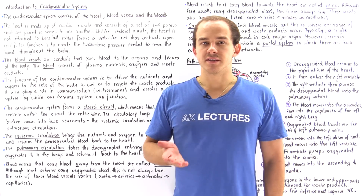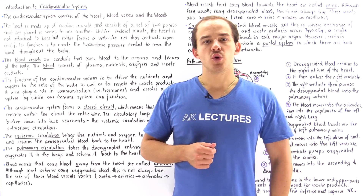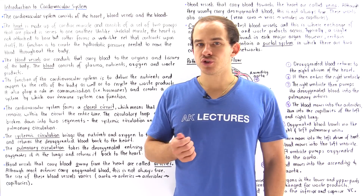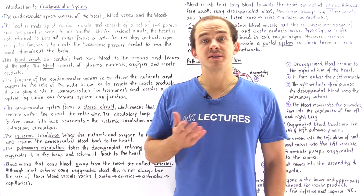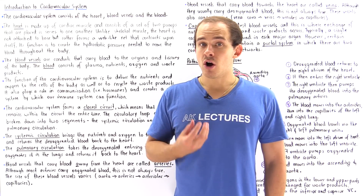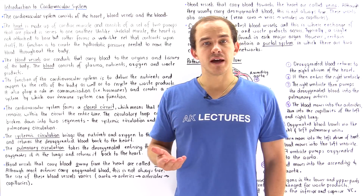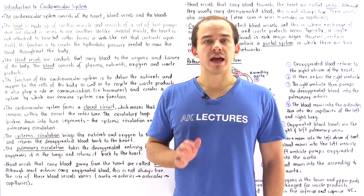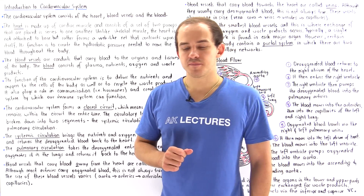The cardiovascular system, also known as the circulatory system, consists of our heart, the blood vessels, as well as the blood.